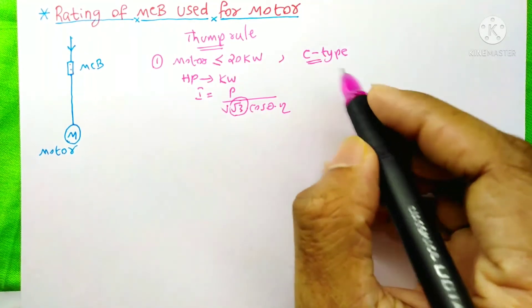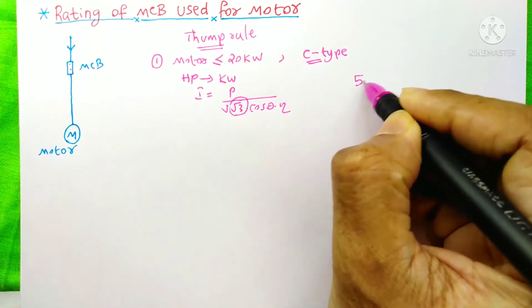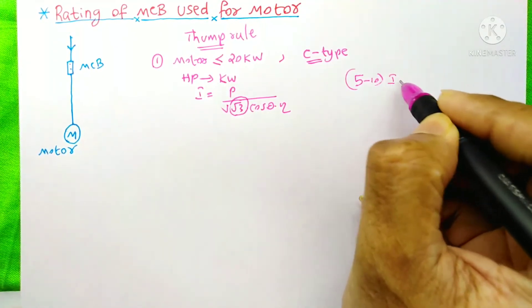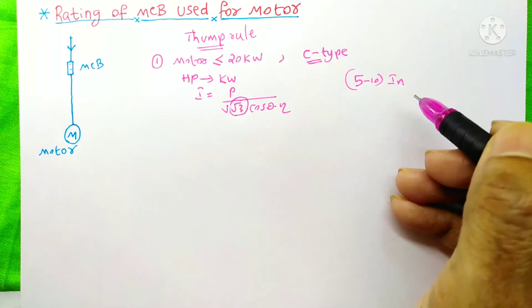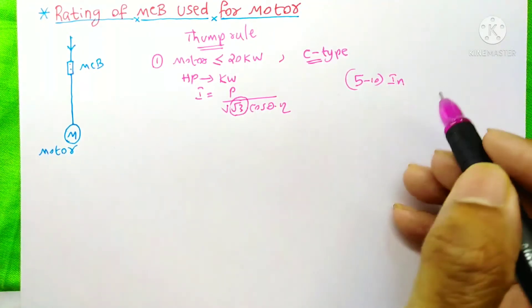This C-type MCB will allow 5 to 10 times of the rated current for a short time, maybe for one to three seconds.